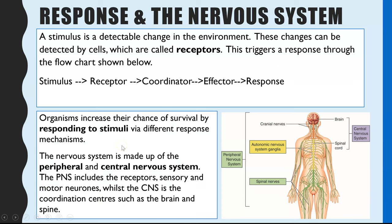The ability for an organism to respond to changes in their environment increases their survival rate. The nervous system has two key sections: the central nervous system, which is the brain and the spinal cord — that would be the coordinator part of the flow diagram — and also the peripheral nervous system, which is made up of the receptor cells, the sensory neurons, and the motor neurons.